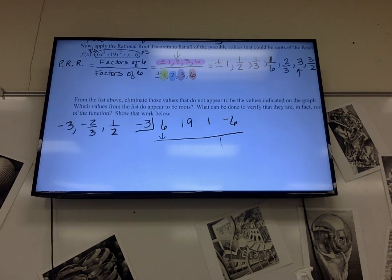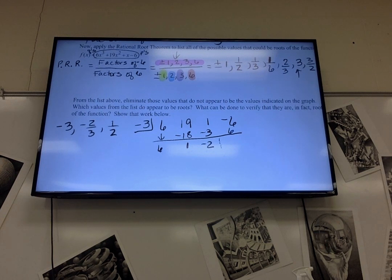So I bring down the 6, even though this stuff goes away. Bring down the 6, multiply, get negative 18, add those you get 1. Negative 3 times 1 is negative 3, add those you get negative 2, multiply those you get 6, sure enough I get 0.